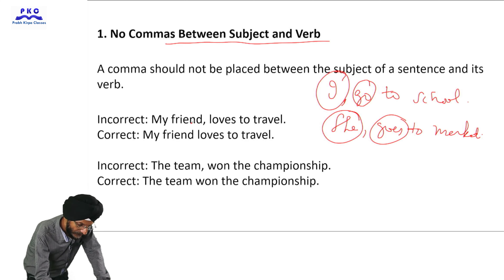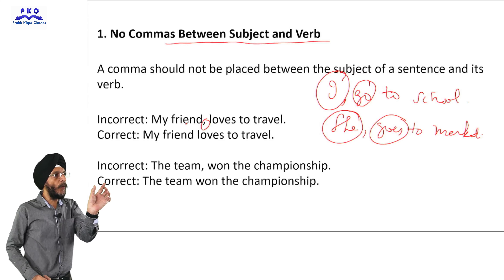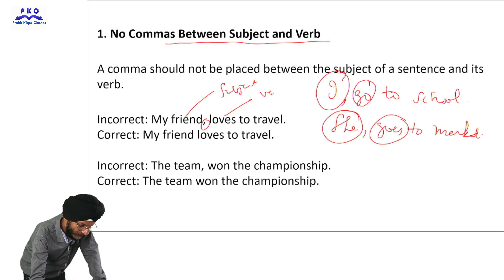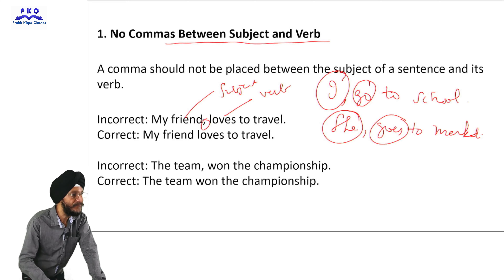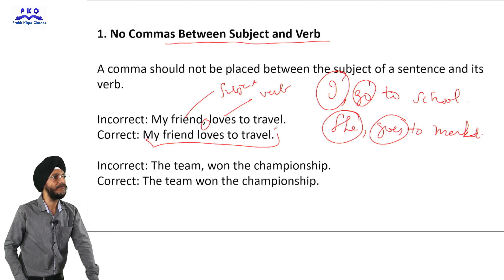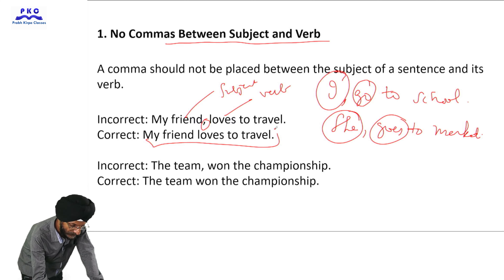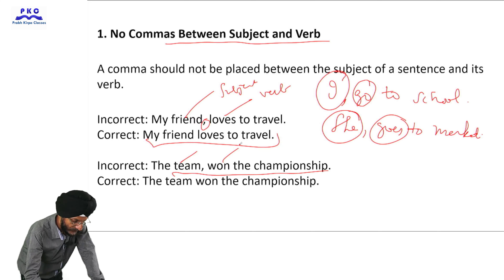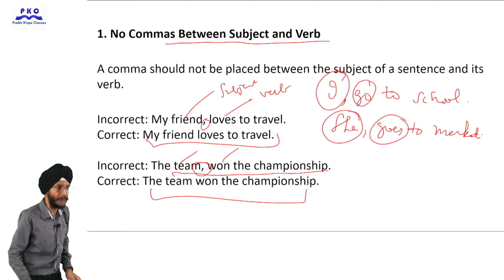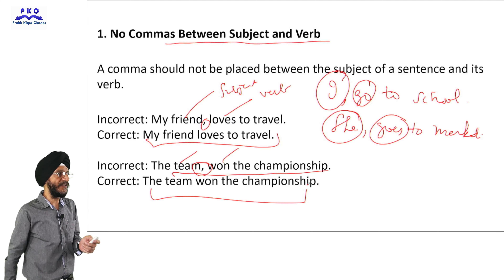Other examples: 'My friend loves to travel.' Here, a comma between 'friend' and 'loves' is unnecessary, because 'friend' is the subject and 'loves' is the verb. The correct sentence is: 'My friend loves to travel' — without a comma in between. Another example: 'The team won the championship.' 'Team' is the subject and 'won' is the verb, so a comma in between is unnecessary. The correct sentence is: 'The team won the championship' with no comma between subject and verb.